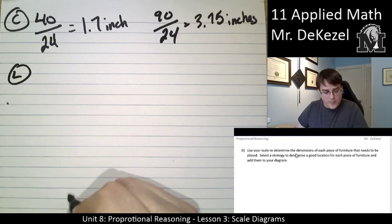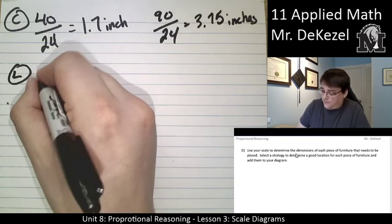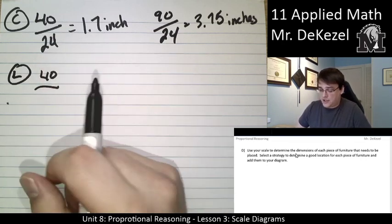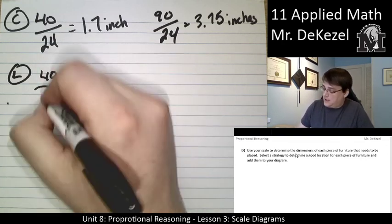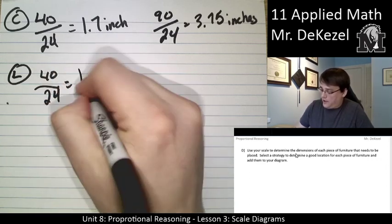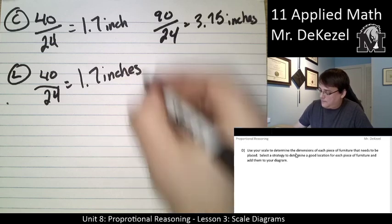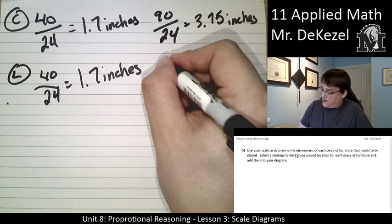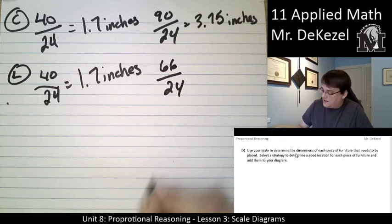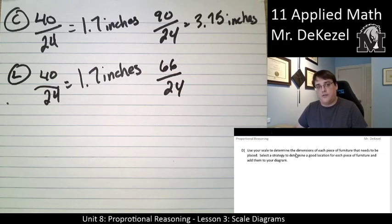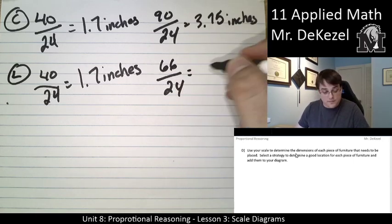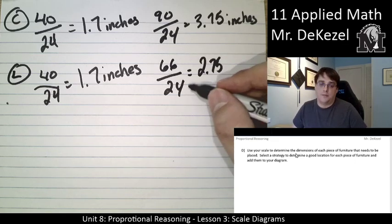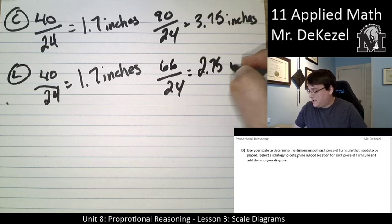Let's do the loveseat next. The loveseat has a side, again, 40 inches. So it's probably the width of it, the depth, away from the wall. Same as the couch. Probably got a matching set. Good job, Maxine. So 40 divided by 24, we already know is 1.7 inches. And then we have the length of the loveseat, which is 66. That makes sense. It's about a third of the couch. Two people instead of three. Everything is matching up here. And if we go 66 divided by 24, make it 24 times smaller, we get 2.75 inches.